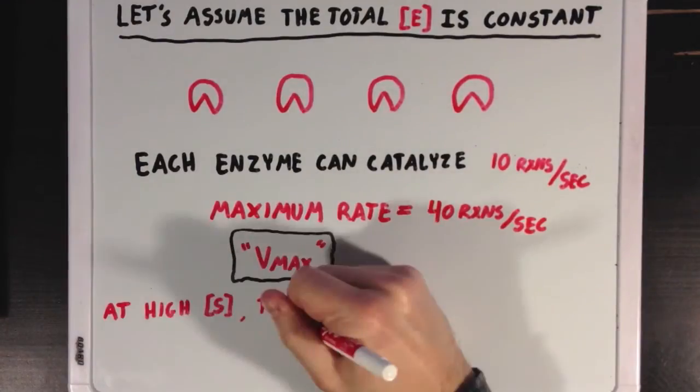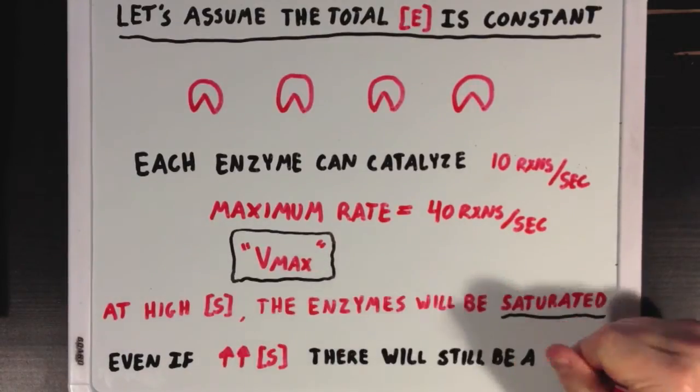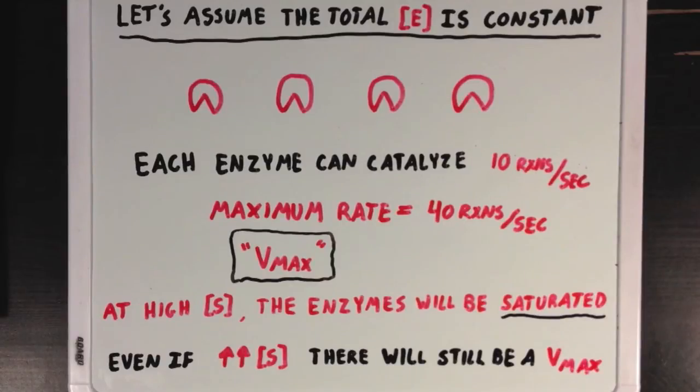The idea here is that at really high concentrations of substrate, the enzymes will be saturated and full up with substrate, and won't be able to react any more quickly. Even if we were to really increase the concentrations of substrate a lot, there will still be a Vmax. There's only so much that we can increase the rate of a reaction by increasing the substrate concentration.